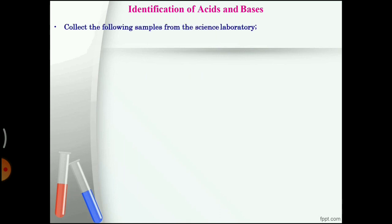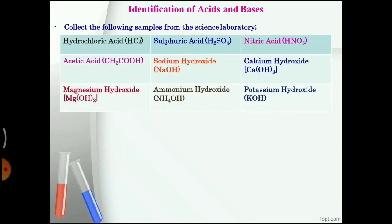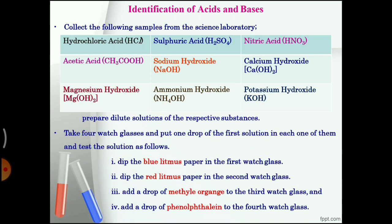How to identify acids and bases using these indicators. First, collect the samples from the science laboratory. Prepare dilute solutions of the respective substances. Take four watch glasses and put one drop of the first solution in each of them. Then test the solution as follows: dip blue litmus paper in the first watch glass, dip red litmus paper in the second, add a drop of methyl orange indicator to the third, and add a drop of phenolphthalein to the fourth. Observe what happens.